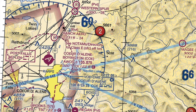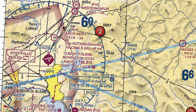We can tell right off the bat that this is the Coeur d'Alene airport. We see this magenta airport symbol, which tells us there's an airport here, and then we see this information. We know this information is related to this specific airport because it's the same color — it's both magenta. If it were blue, it would be a towered airport, but we're not dealing with a towered airport in this example — we're dealing with a non-towered.